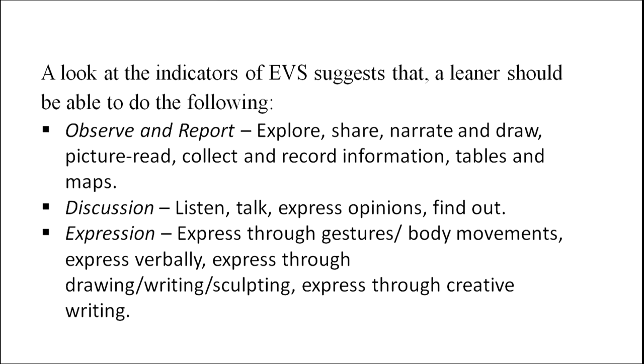Looking at the indicators of EVS, the learner should be able to do several things. For instance, he should be able to observe and report — meaning the child should be able to explore, share, narrate, draw. He should be able to read and interpret pictures, collect and record information, read tables, and read maps. Map reading is a very important skill for children because today we talk about maps a lot in our daily life.